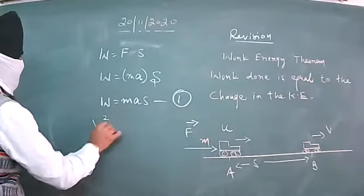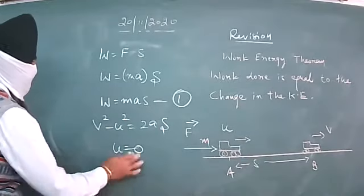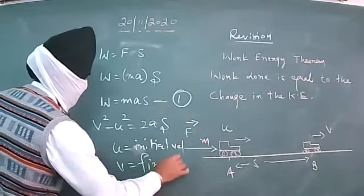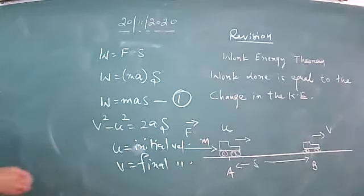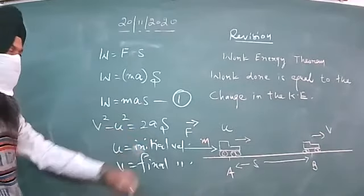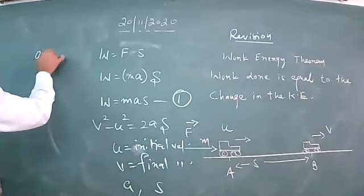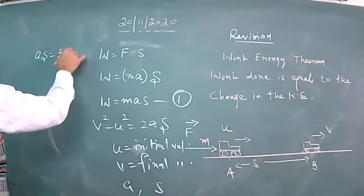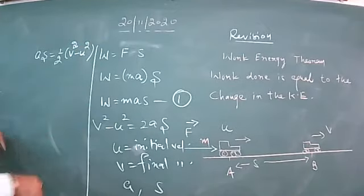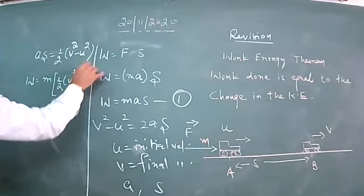Let us take the third equation of motion: v squared minus u squared equals 2as, where u is the initial velocity, v is the final velocity, a is acceleration, and s is the distance covered. From this equation, s will be equal to one-half into (v squared minus u squared) divided by a. Substituting this value of s into equation one, work done equals m into one-half into (v squared minus u squared).